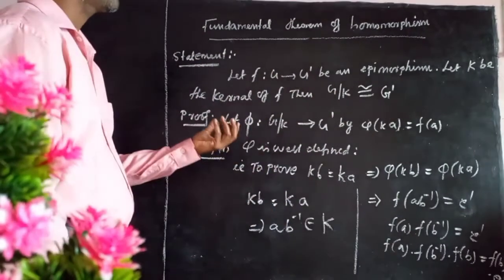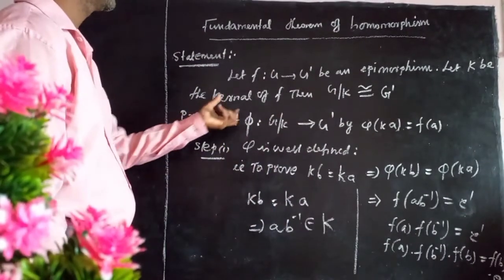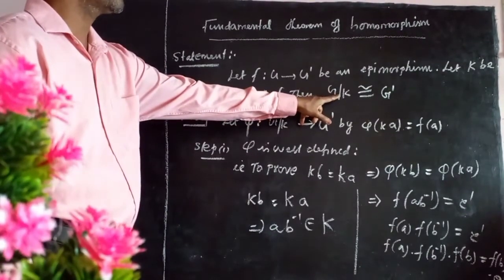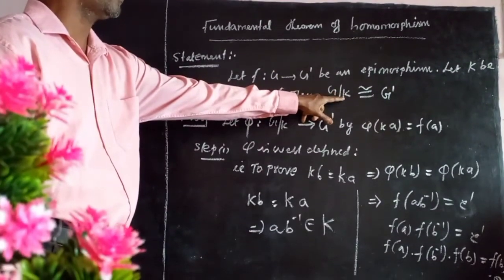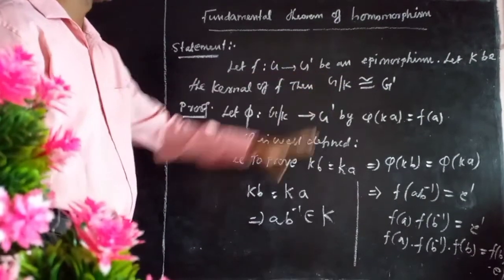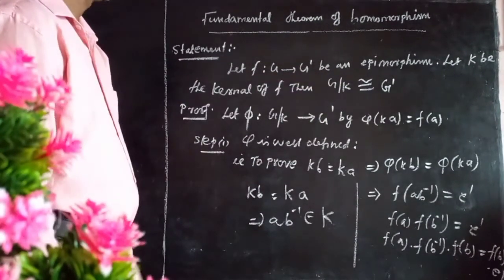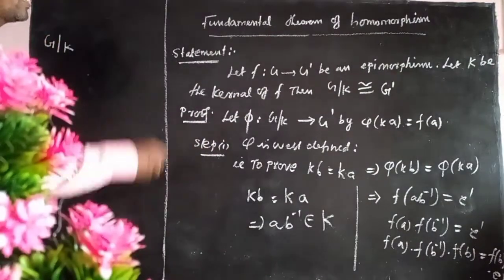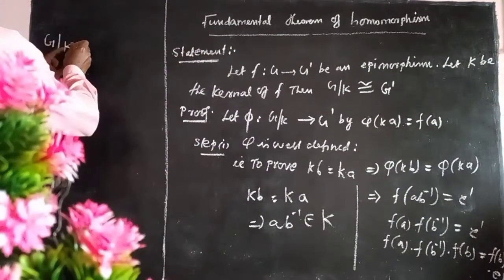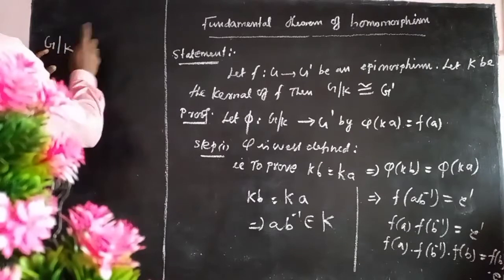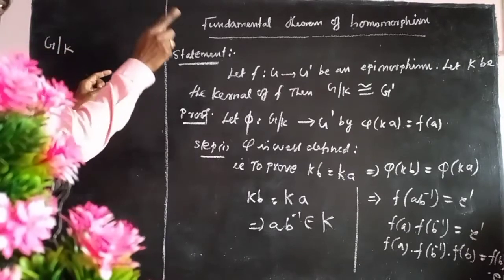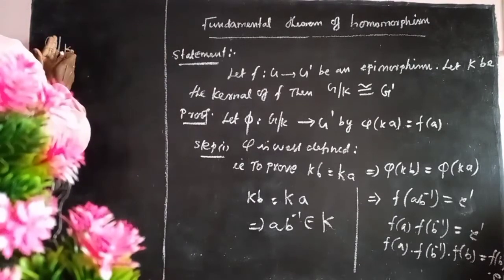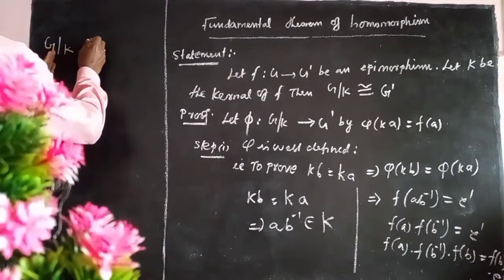The first thing is that the kernel is just a kernel. Then the quotient group — that is G by K elements. This is a quotient group, so quotient group elements: G divided by K, that is G by K elements.